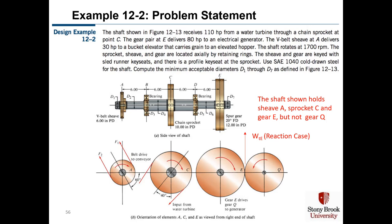Turning to gear E and gear Q: the shaft holds shiv A, sprocket C, and gear E, but it doesn't hold gear Q. We must establish whether this is an action case or a reaction case. The problem says gear E is driving gear Q, which makes it a reaction case. Gear E rotates clockwise and gear Q counterclockwise, so gear E exerts a tangential force on gear Q downward, but gear Q resists with an equal and opposite reaction WTE — the upward force that actually acts on the shaft.